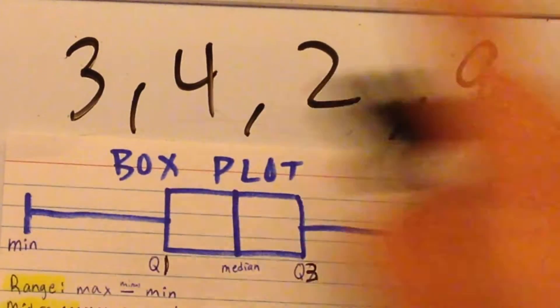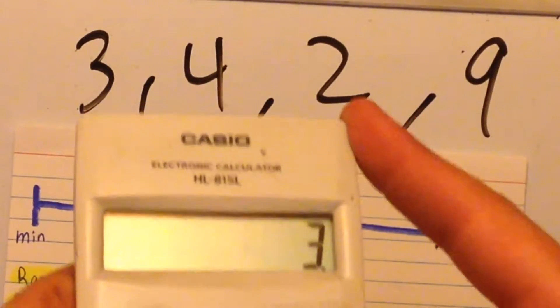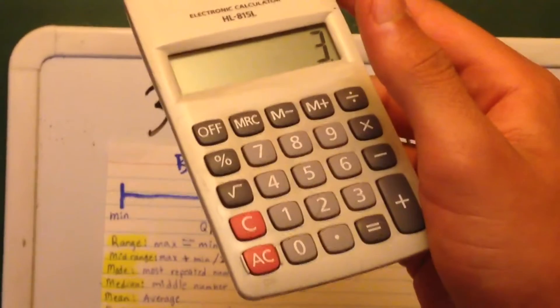And the median, we're just going to add all of them and divide by 2. So I'm just going to go ahead and add 3 plus, let me zoom out a little bit.